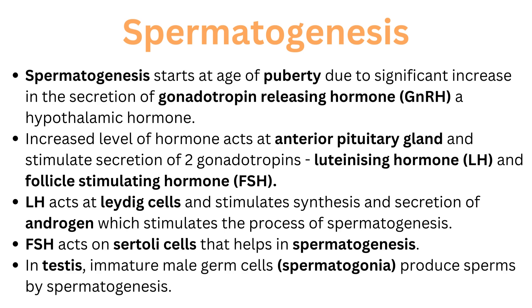Spermatogenesis starts at the age of puberty due to a significant increase in secretion of gonadotropin-releasing hormone (GnRH), a hypothalamic hormone. Increased levels of hormones act at the anterior pituitary gland and stimulate secretion of two gonadotropins: luteinizing hormone (LH) and follicle-stimulating hormone (FSH). LH acts at Leydig cells and stimulates synthesis and secretion of androgen, which stimulates spermatogenesis. FSH acts on Sertoli cells that help in spermatogenesis in the testes.